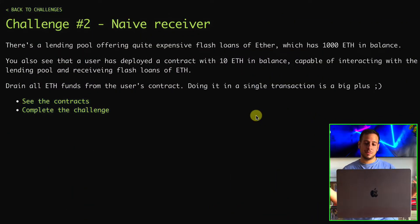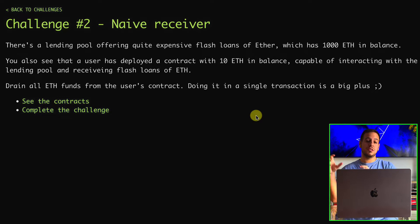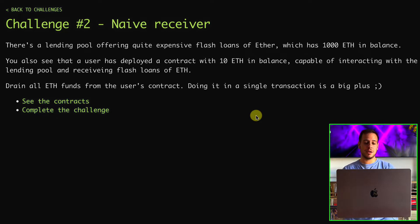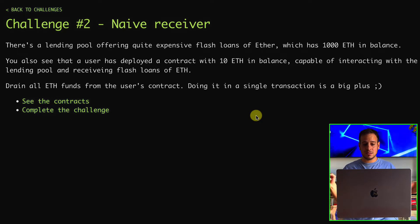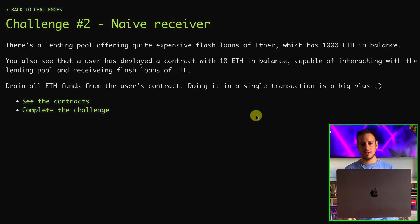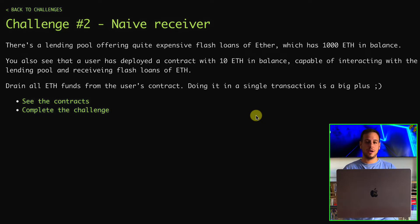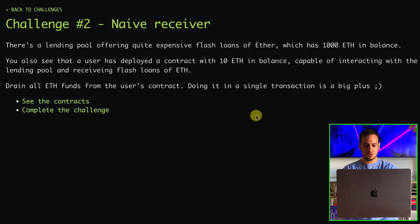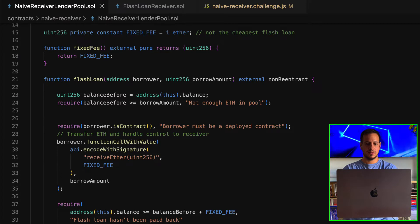In the second challenge, the Naive Receiver one, there is a lending pool offering quite expensive flash loans of Ether, which has 1000 ETH in balance. You also see that there is a user that deployed a smart contract with 10 ETH in balance, yet is capable of interacting with the lending pool and receiving flash loans of ETH. You need to drain all the ETH funds from the user's contract. Doing it in a single transaction is a big plus. So we are not attacking the lending pool, but we are attacking the user that is using the lending pool to execute flash loans.